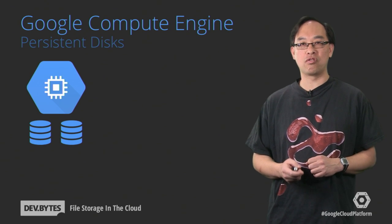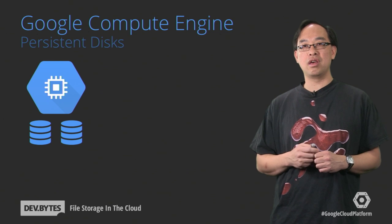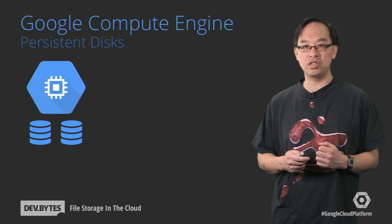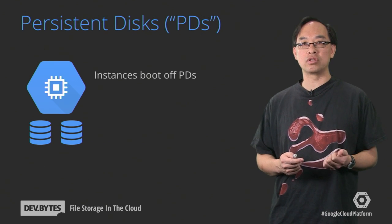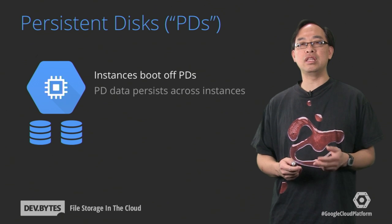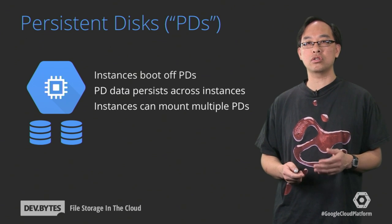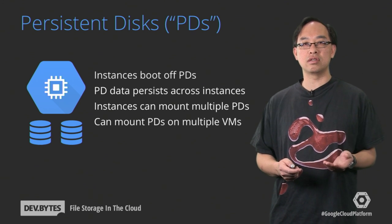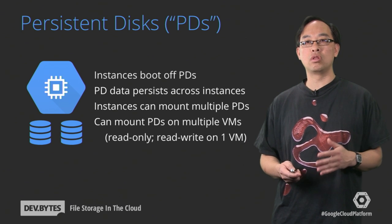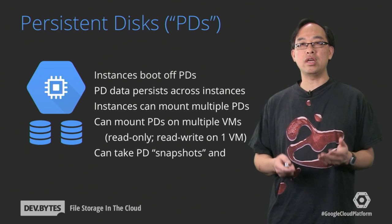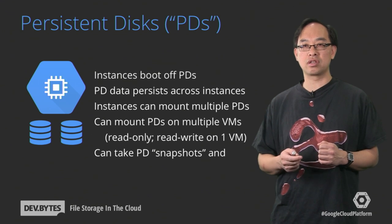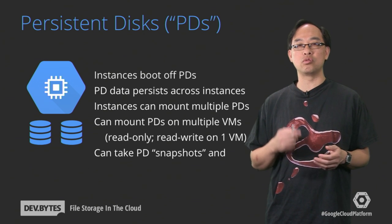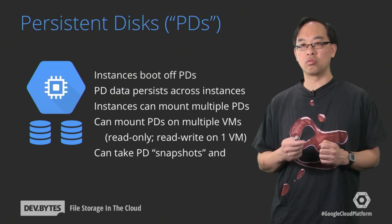One last option for file storage in the cloud: persistent disk. Think of them as versatile hard drives in the cloud available for your fleet of Google Compute Engine virtual machines. While instances boot from persistent disks, their content lives independently of VM creation and destruction. Instances can mount multiple disks. You can mount persistent disks on multiple instances read-only, or read-write if mounted only on one VM. You also have the ability to take a point-in-time snapshot of a persistent disk, then restore it to any Compute Engine region in the world. You can do any of these from Compute Engine's web interface, command line tool, or its RESTful web API.